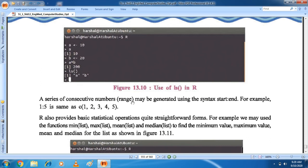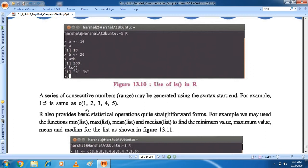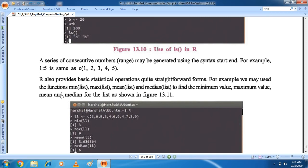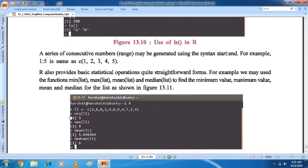The function Ls displays a list of all the variables we have defined as shown in figure 13.10. Student, we have used this command in Vim Editor. Right? Ls command, student, to get number of list directly. A series of consecutive numbers range may be generated using the syntax start colon end. For example, 1 colon 5 is same as C 1, 2, 3, 4, 5. R also provides basic statistical operations in quite straightforward form. For example, we may use the function mean list, maximum list, mean list and median list. If you want to find minimum number, maximum number, mean, median, then we can find out. Here we can see minimum value, maximum value, mean and median for the list.